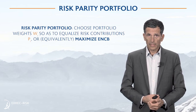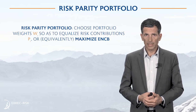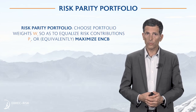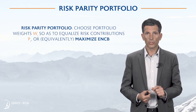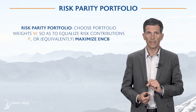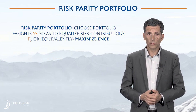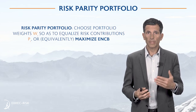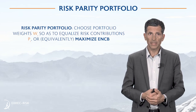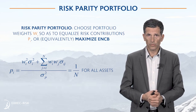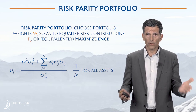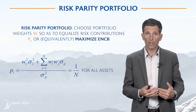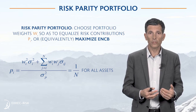Now everything is in place to introduce the risk parity portfolio. The risk parity portfolio is a portfolio where the portfolio weight W_i has been chosen so as to equalize the risk contribution P_i, or equivalently so as to maximize the effective number of correlated bets. What we impose is that P_i is equal to 1 over N for all assets. So a risk parity portfolio is an equally weighted portfolio — but not in terms of dollar contributions — equally weighted in terms of risk contribution.